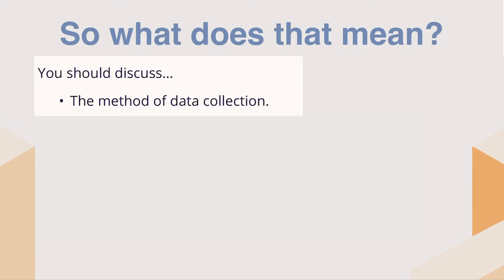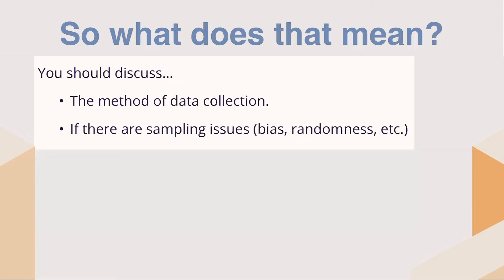So what does that mean? First, you should discuss the method of your data collection. How are you going to get your data? Are you getting it from a secondary source, or are you gathering the information yourself? Are there sampling issues? Is there any kind of bias or randomness that needs to be addressed? These are the things you want to talk about — they are definitions that are part of the IA and part of the IB curriculum, and using these aspects will only further enhance your IA.